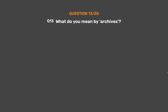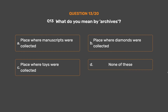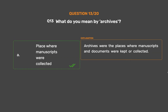Question 13: What do you mean by archives? Option A: Place where manuscripts were collected. Option B: Place where diamonds were collected. Option C: Place where toys were collected. Option D: None of these. The correct answer is Option A: Place where manuscripts were collected. Archives were the places where manuscripts and documents were kept or collected.